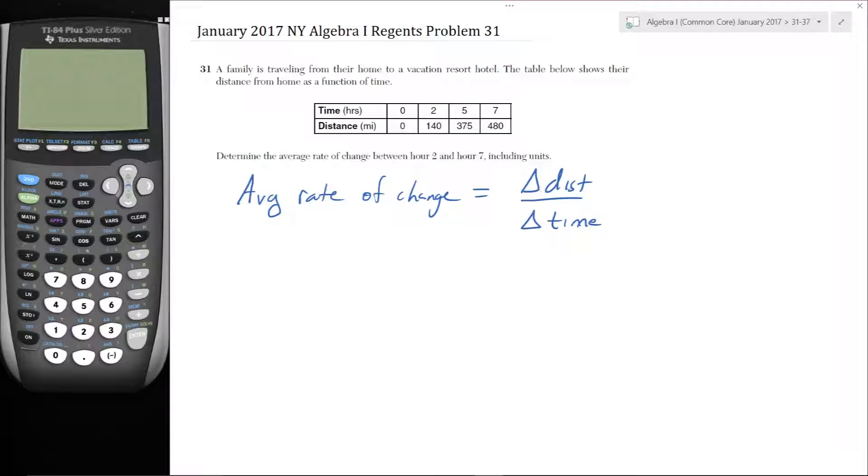So change in time. It would be delta y over delta x frequently, but in this case it's distance and time. So in this case, between hour 2 and hour 7, the average rate of change is calculated exactly the same way you would calculate slope. It's just that it's not a slope because it's not a straight line.